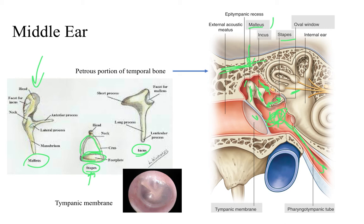One more thing to point out is the tympanic membrane here — this is what a normal tympanic membrane looks like. Notice that it has a pearly gray appearance, you can see through it, and in a real one you should be able to tell whether it's bulging or not, although you can't really see that clearly in this picture.